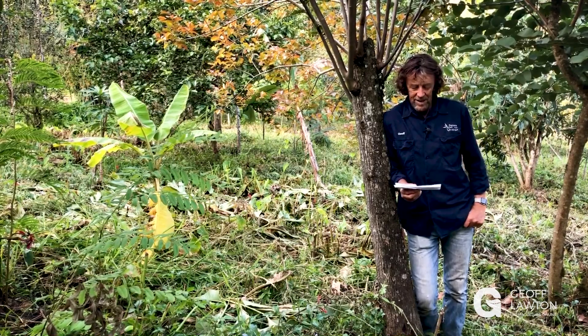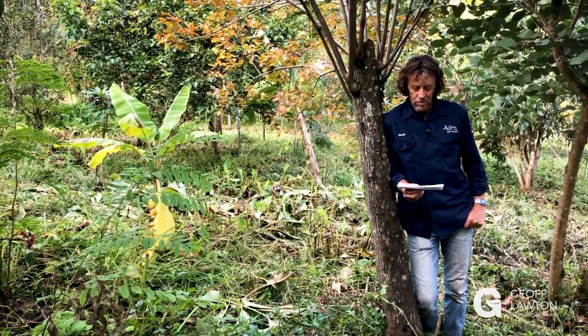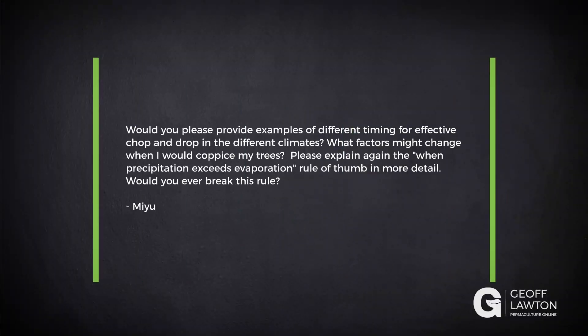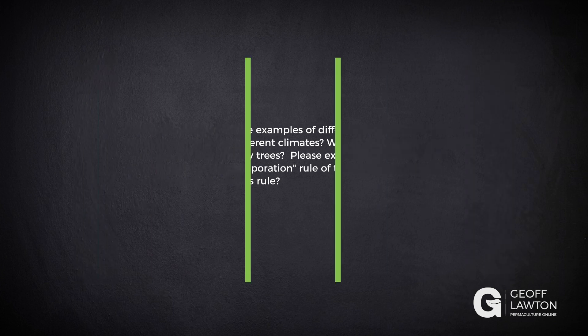Me You has a question: Would you please provide examples of different timing for effective chop and drop in different climates? What factors might change when I would coppice my trees? Please explain again the 'when precipitation exceeds evaporation' rule of thumb in more detail. Would you ever break this rule?